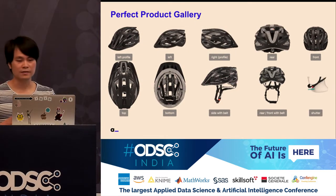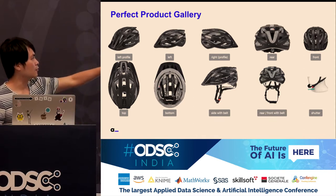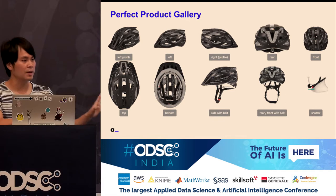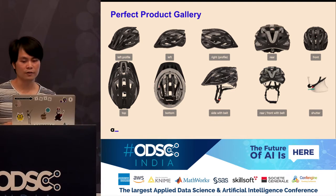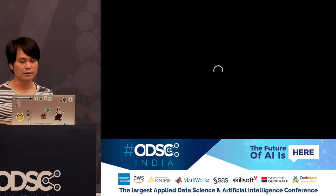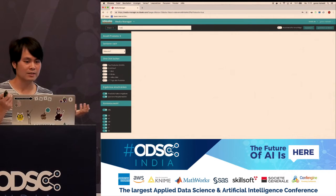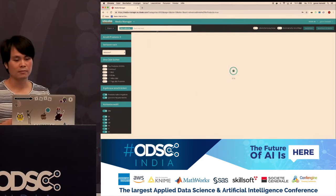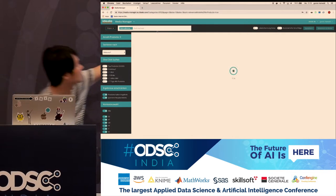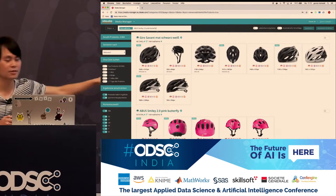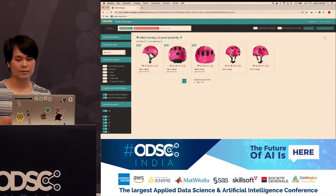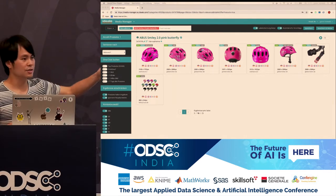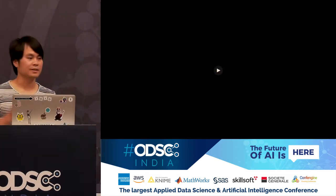Optimally you'd want a perfect product gallery — left profile, right profile, rear, front — something automatic that sorts the images in the way we want to display for the user. So we use image tagging to classify images, then implement it in our system. Basically there's now a button called Label Erkennen — German for label detection. With machine learning and deep learning, you can have the gallery in perfect order without touching it manually. That's pretty cool.